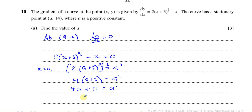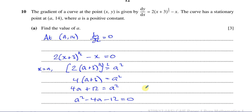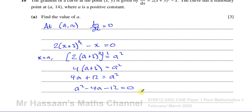Expanding the bracket: 4a + 12 equals a squared. If I bring everything to one side by subtracting 4a and 12 from both sides, I get a squared minus 4a minus 12 equals zero.